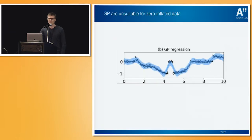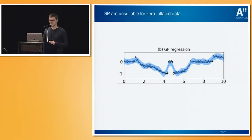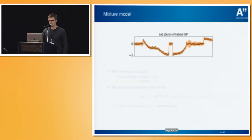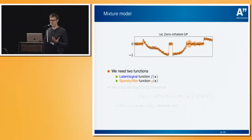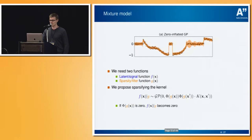Gaussian processes in general don't work with zero-inflated data. Here we see an example where the y-axis has lots of values around zero — those are the off regions for this signal — and then the actual signal is in the regions away from zero. So GPs don't really work here and we clearly need something else. What we propose is zero-inflated Gaussian processes, where we clearly need two functions: the latent or signal function f, and the sparsity or masking function g, which defines whether the function is on or off. We propose to encode this sparsity directly into the covariance of the latent function f.